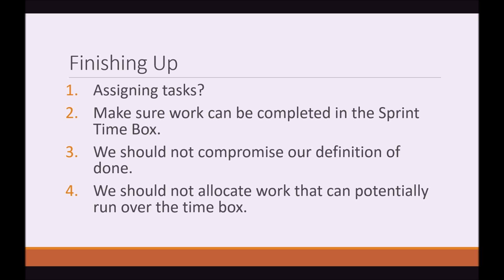We must make sure all the work can be completed within the Sprint time box. We should not compromise our definition of done, and we should not allocate work that could potentially run over the time box. This is to put as little stress on the development team as possible, so they can take their time to research, review the existing code, and make sure the new features they're building are done to the best of their ability — not rushed, no shortcuts taken. In Agile, how we approach every task is to look for the quick win first and then refactor the code, so we need to make sure there is some time for refactoring to ensure whatever we build is at a good standard.